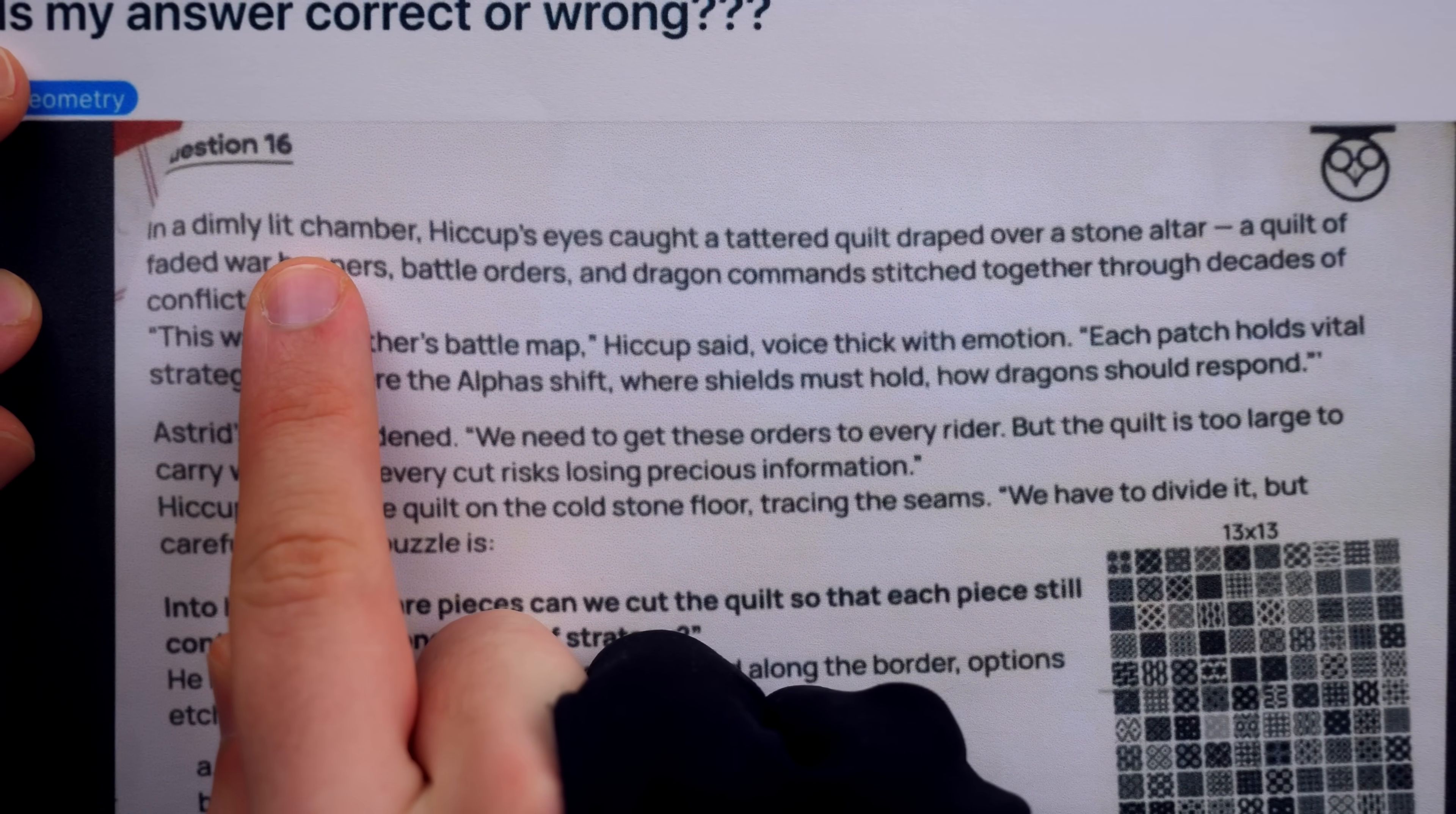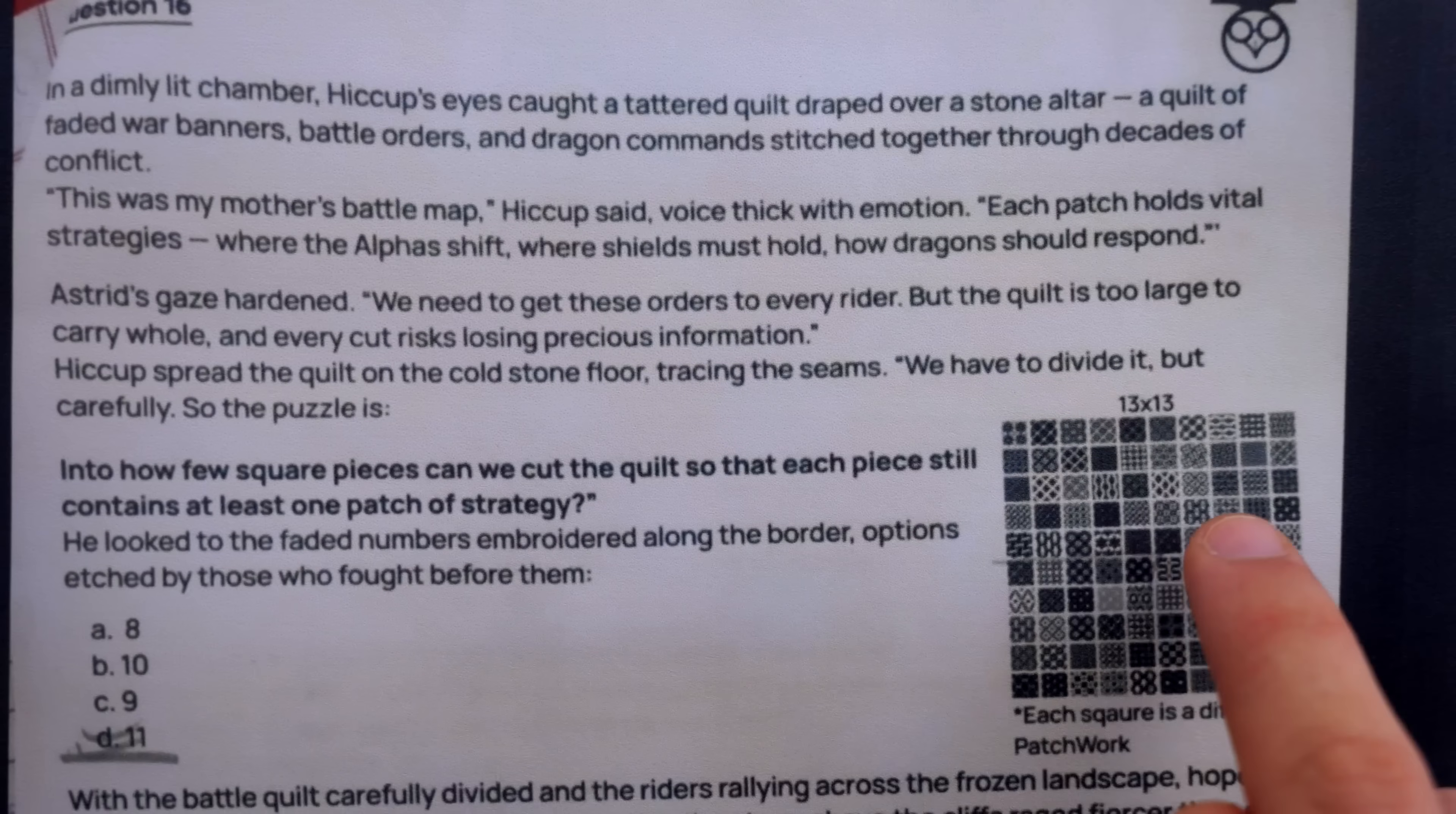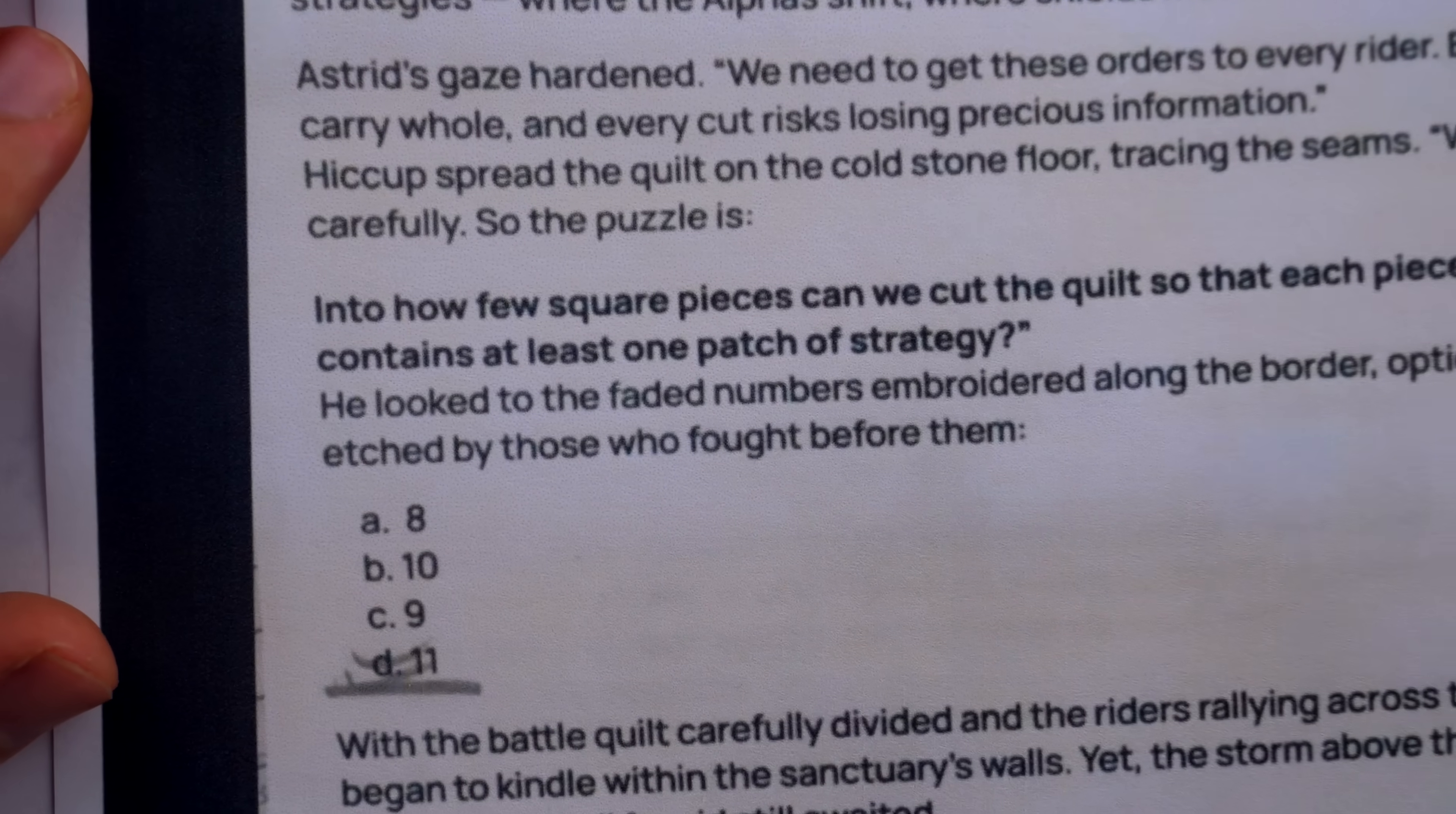In a dimly lit chamber... into how few square pieces can we cut the quilt so that each piece still contains at least one patch of strategy? The quilt is seen here. He, being Astrid or Hiccup, there's no way to know, looked to the faded numbers embroidered along the border, options etched by those who fought before them. This is an in-universe multiple choice question, and there are the options.